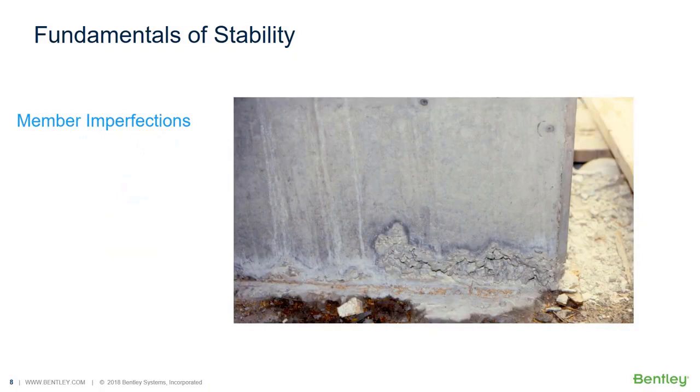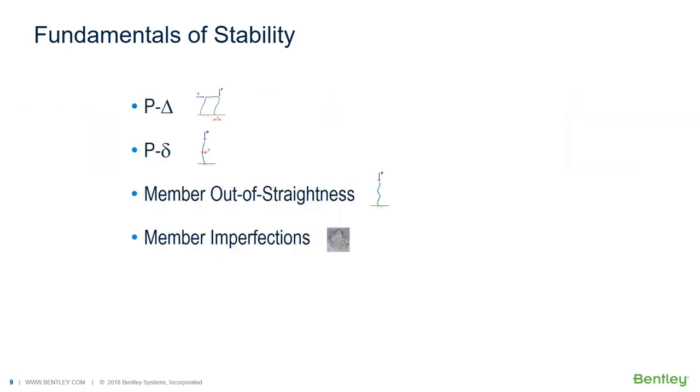Member imperfections. Small voids or variations in concrete strength or aggregate strength result in cross sections that are not perfectly uniform. Not only is the strength affected by these imperfections, but the stability of the member is also impaired. So these are four of the more common conditions addressed in ACI 318 that impact the stability of the structure.